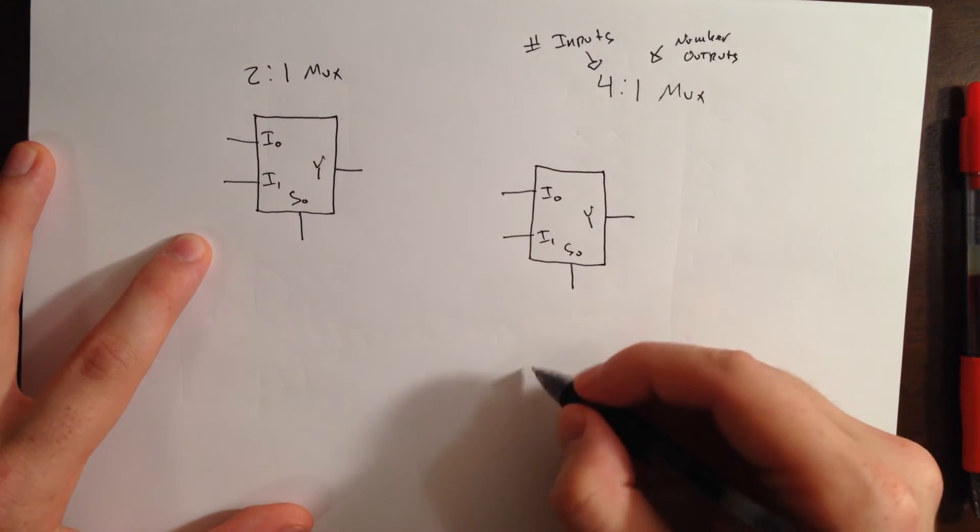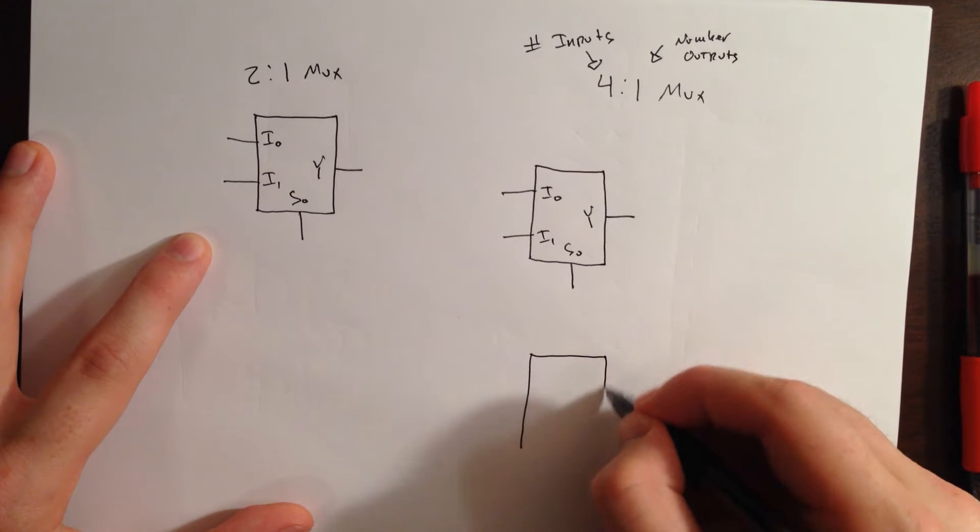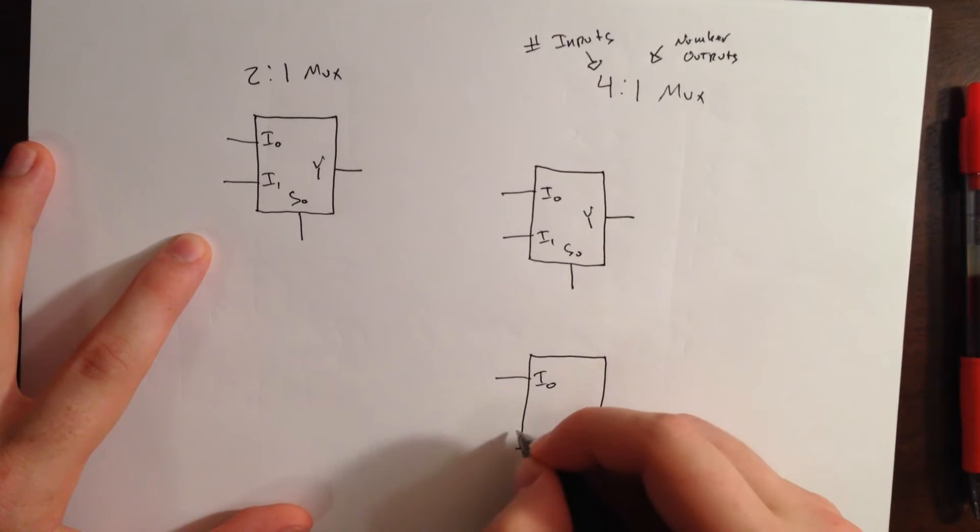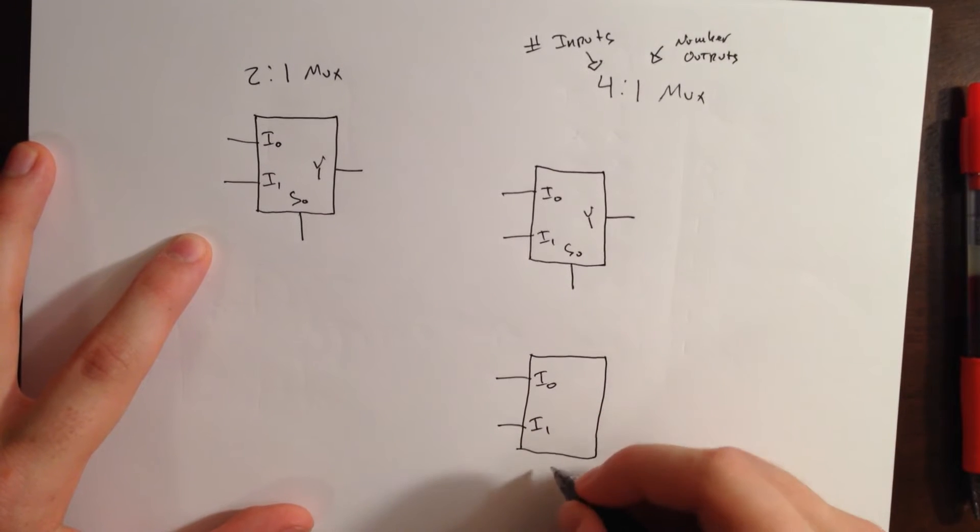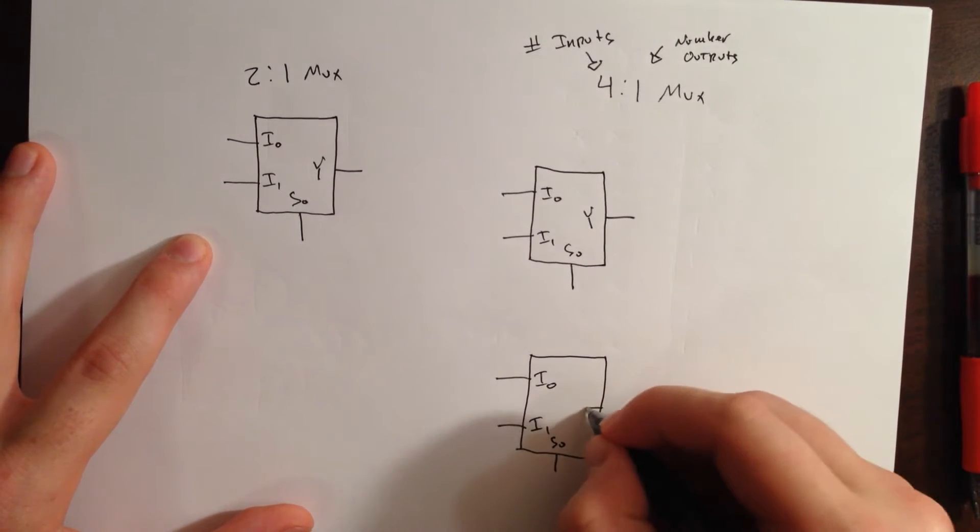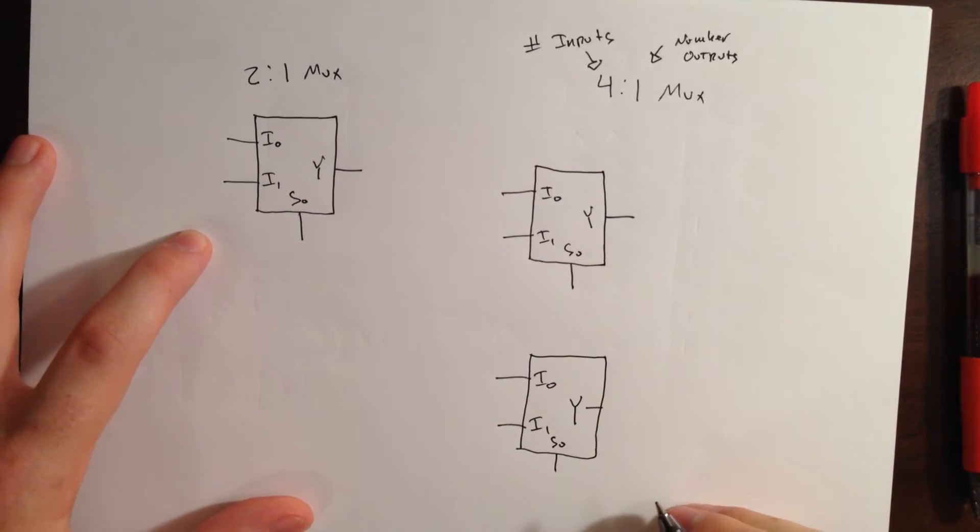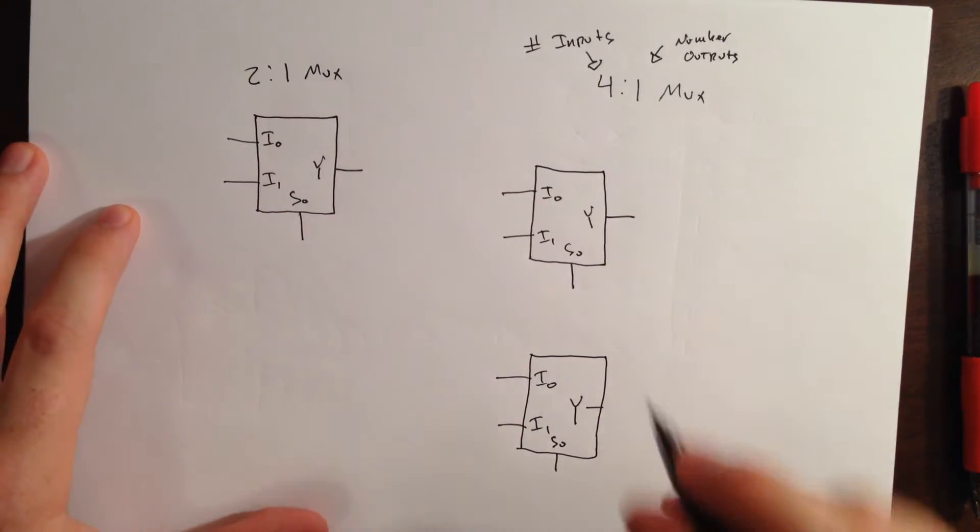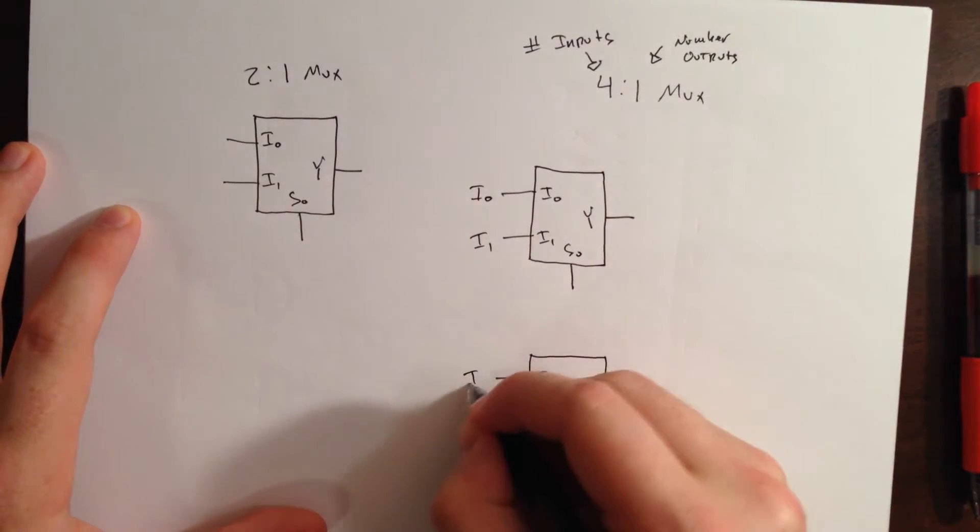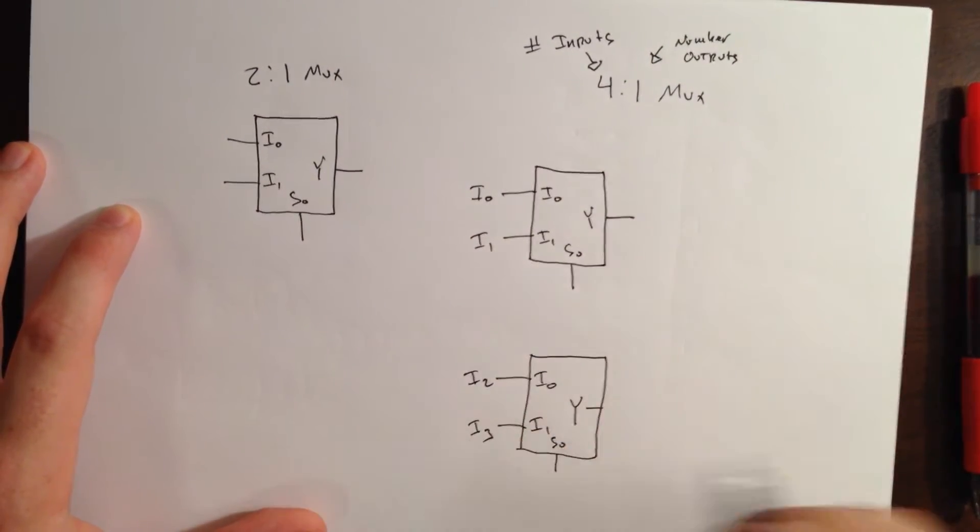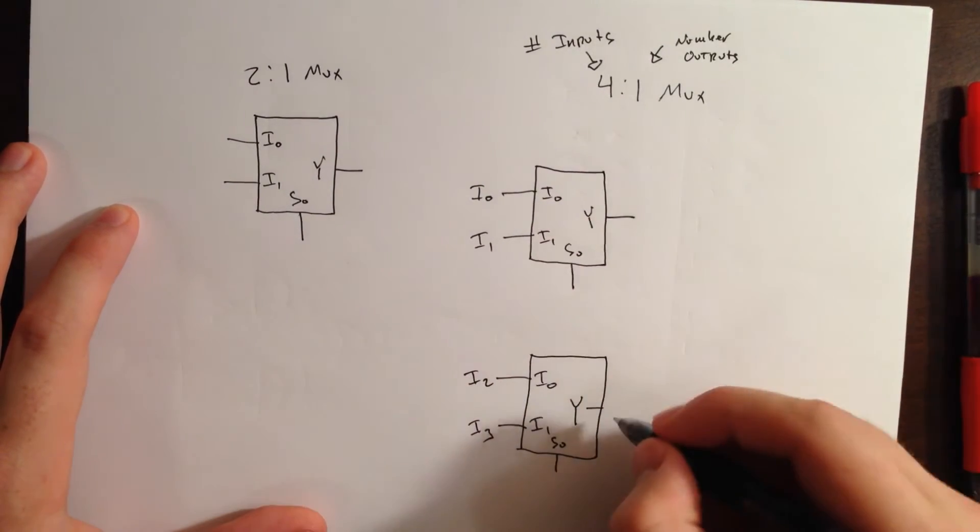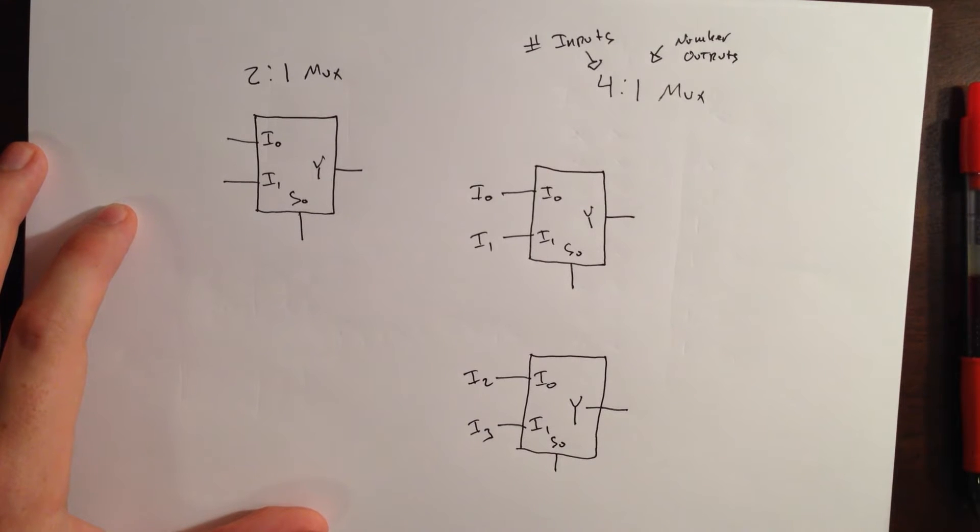And we'll build another one. We'll call this one I0, I1, S0, and Y. And now we have our 4 inputs. We'll call those I0, I1, I2, and I3. But, we need 1 output and right now we have 2 outputs.